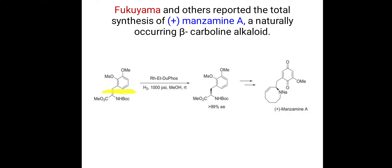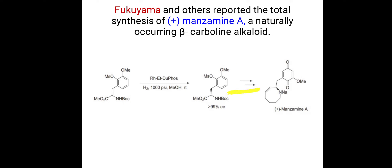Hydrogen gets added across the carbon-carbon double bond, and a chiral center is formed at the carbon attached to nitrogen. Again, the enantiomeric excess is greater than 99%. This intermediate undergoes further reactions to give manzamine A.